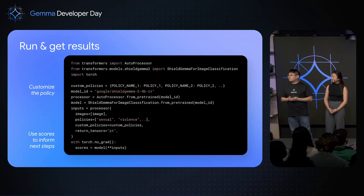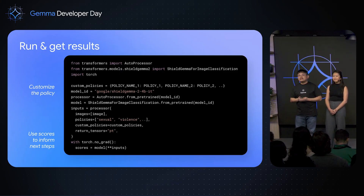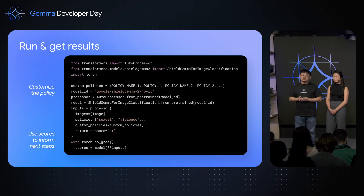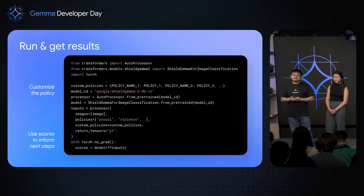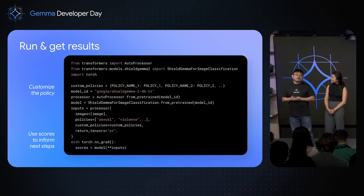Now let's quickly jump into this Python code to see how to run and get results. As Dana mentioned, our model supports both default policies and customized policies, and you can specify your customized policies in this map, which maps from your policy name to your detailed policy definitions. We then call the Shield Gemma image classification class to load our model, prepare model inputs such as the images, the default policy, and the customized policy. Once the input is pre-processed, we can one-click call our model to get predictions. The predicted model probabilities represent the likelihood of whether an image is violating each of your defined policies, and these scores can be further used for downstream tasks such as safety evaluation or distillation.